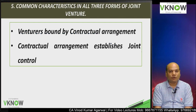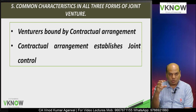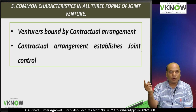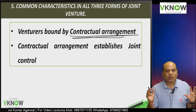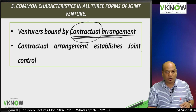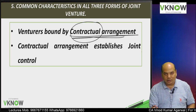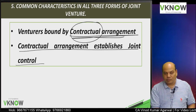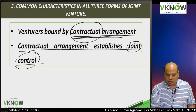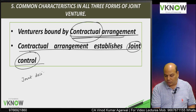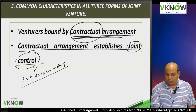Now we will discuss the common characteristics in all three forms of joint venture. There are two common characteristics, and only then is it a joint venture. First, the venturers are bound by a contractual arrangement — there must be a contract, oral or in writing. Second, that contractual arrangement establishes joint control — two or more venturers should have joint decision making power, and one venturer cannot unilaterally take the decision. That is called joint control.